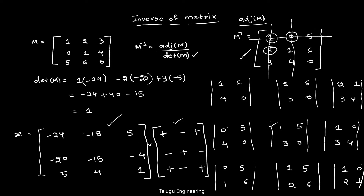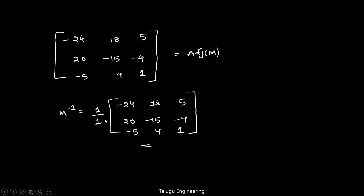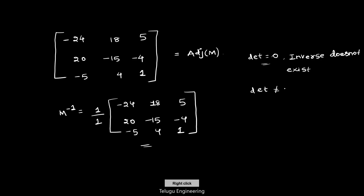Multiplying each element of matrix X by the sign pattern — for example +1·(−24) = −24, and −1·(−18) = +18 — gives the adjoint of M. We then divide by the determinant to get M inverse. One important point: if the determinant equals 0, the inverse does not exist. The inverse exists only when det(M) ≠ 0.